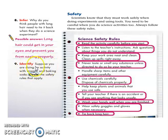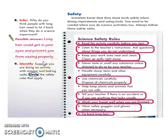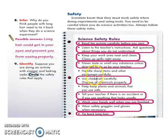Number nine — identify: suppose you are doing an activity with vinegar and baking soda. Circle the safety rules that might help you in the lab. There are nine safety rules listed. Not all apply to this experiment — for example, I didn't circle 'handle sharp items and other equipment' because we didn't use any sharp objects. I also didn't circle 'help keep plants and animals safe' because we didn't use plants or animals in that experiment.